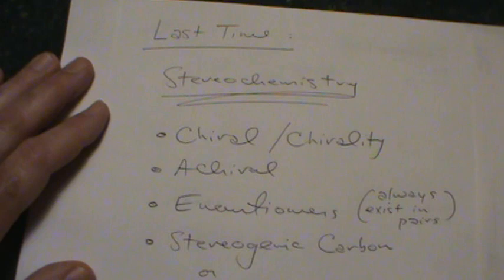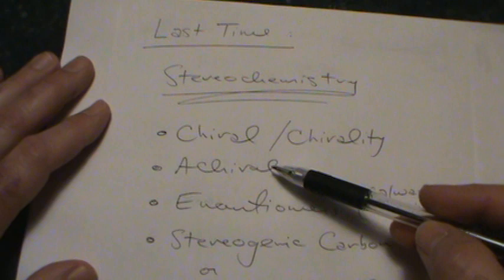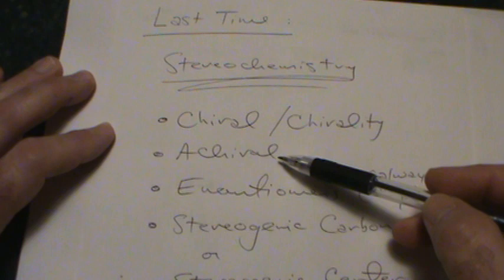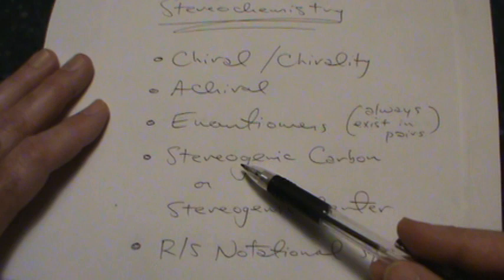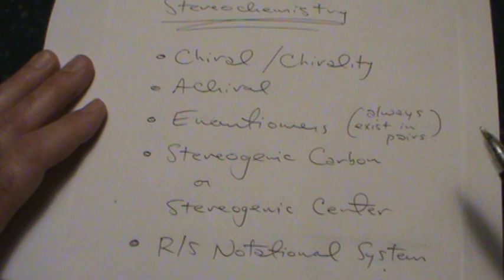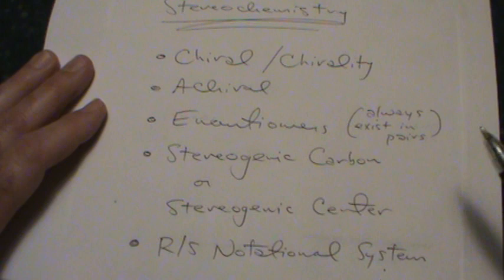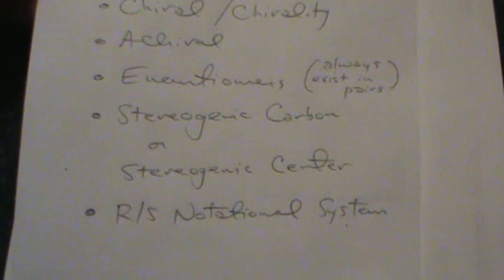Last time we covered quite a bit. We talked about the notion of chiral compounds and the property of chirality, and we talked about achiral compounds — achiral compounds are just compounds that are not chiral. We talked about enantiomers, which always exist in pairs like your left and right hand. We talked about stereogenic centers or stereogenic carbons — a carbon atom bound to four different atoms or groups. And finally, we talked about the RS notational system. I'm going to spend some time reviewing these concepts because they're so important.